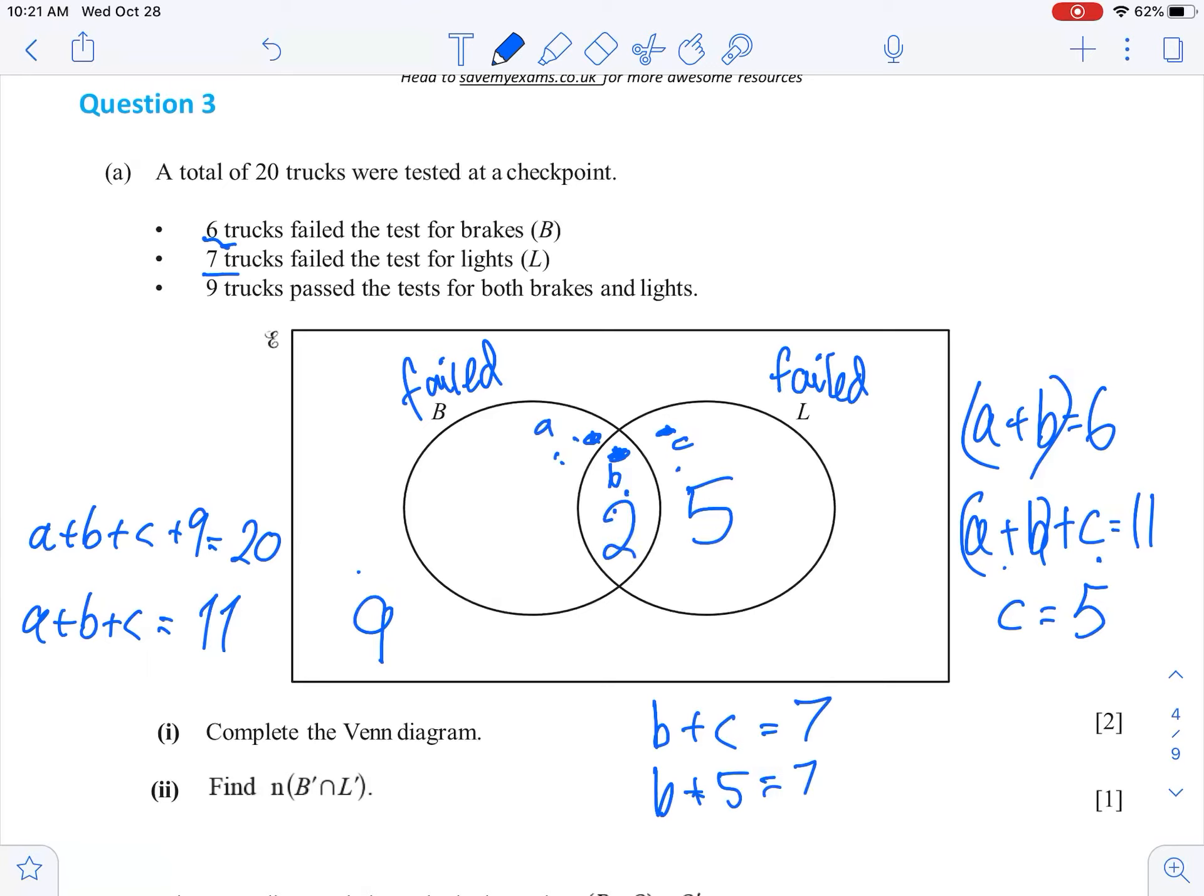And then the last part, there's lots of ways of doing this one now, let's do it with this one. 6 trucks failed, so this plus this is 6, so this must be 4. Now we'll check our answer. Is 9 plus 4 plus 2 plus 5, 20? I think 9 plus 4 is 13, 14, 15, 5 is 20. Done.